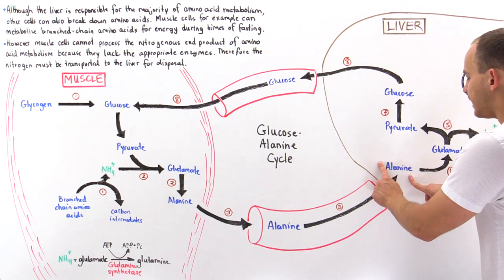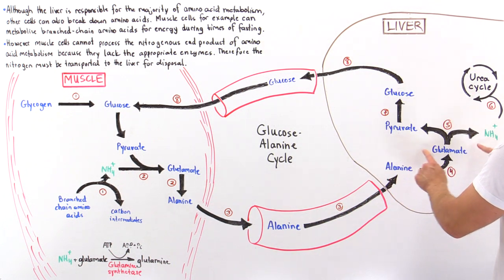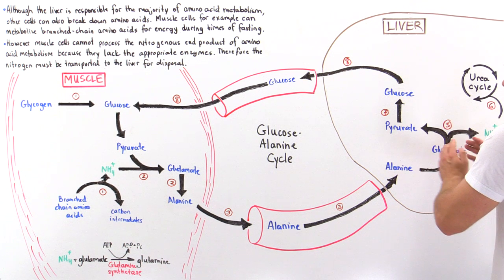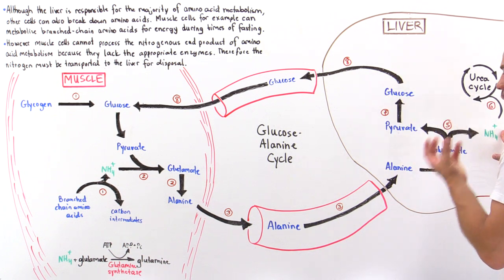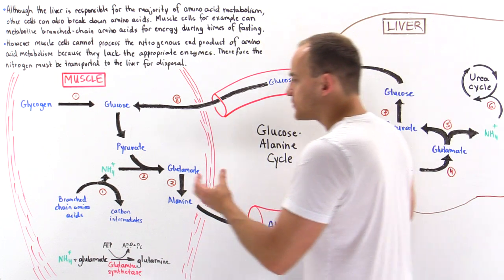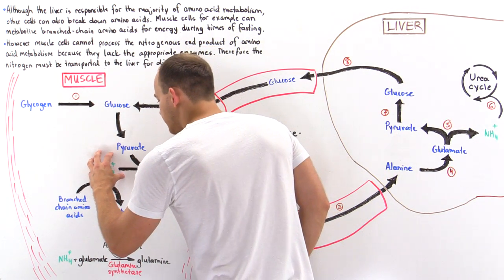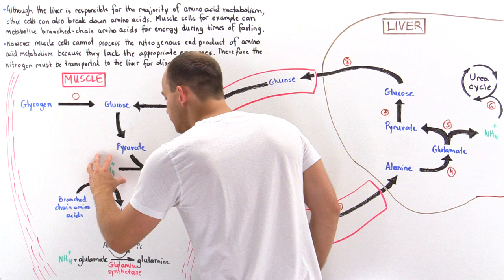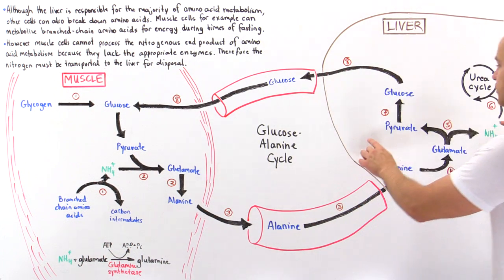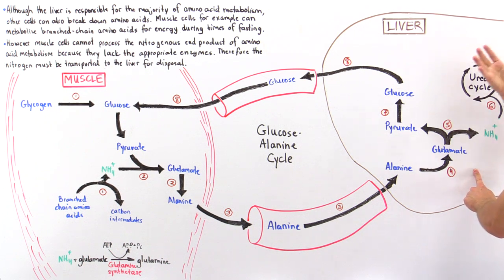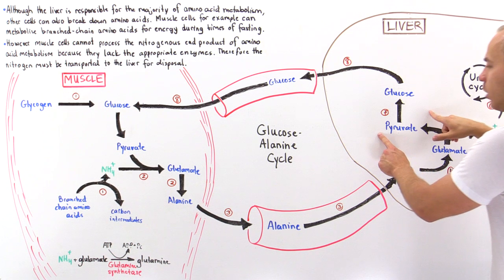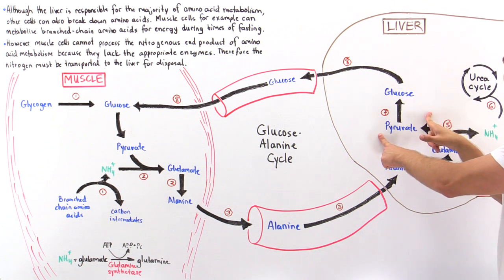Once the alanine moves into the liver, it undergoes this pathway in reverse. We begin with alanine, which is converted into glutamate, and then that breaks down into pyruvate and ammonium. Ultimately, the ammonium that was formed in the muscle has made its way to the liver, and it is the liver that uses the urea cycle to dispose of this toxic substance. Notice also that we form pyruvate as a product in the liver.